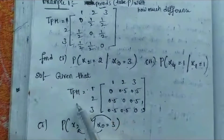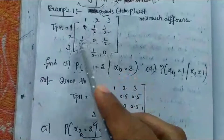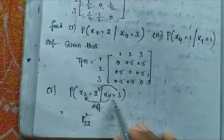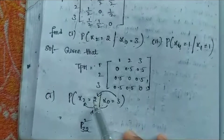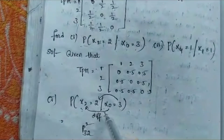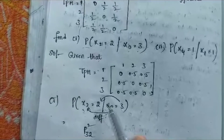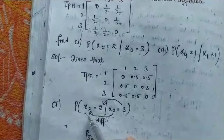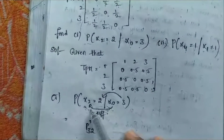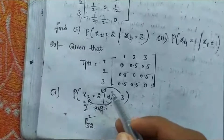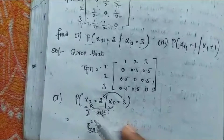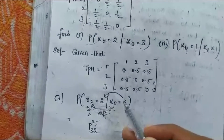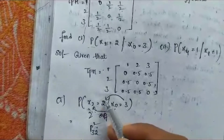For P(X2=2 | X0=3): the periods are X0 and X2. Going from left to right, the difference between X0 and X2 is 2, so we take P squared. It is moving from state 3 to state 2, so we write P² with suffix 3 to 2.